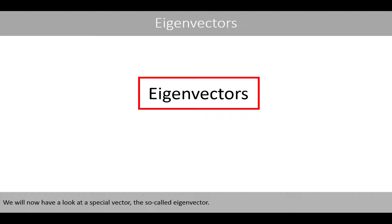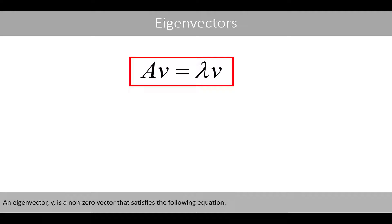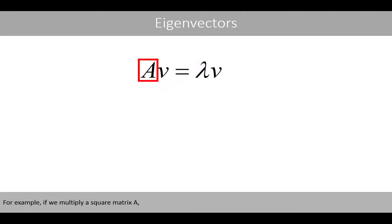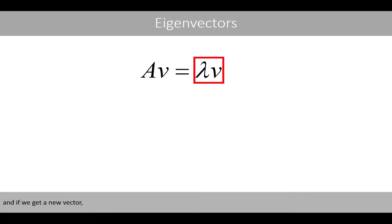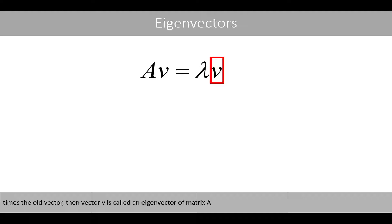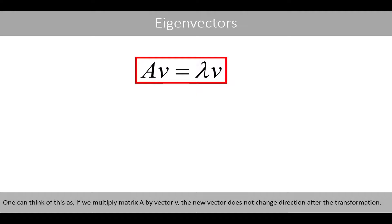We will now have a look at the special vector, the so-called eigenvector. An eigenvector V is a non-zero vector that satisfies the following equation. For example, if we multiply a square matrix A by a column vector V and if we get a new vector that is equal to a number times the old vector, then vector V is called an eigenvector of matrix A. One can think of this as: if we multiply matrix A by vector V, the new vector does not change direction after the transformation.